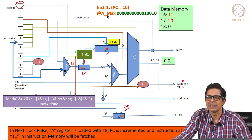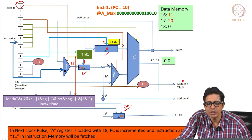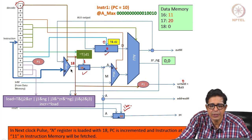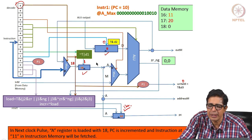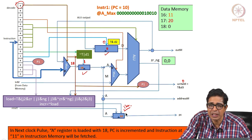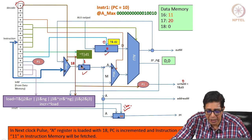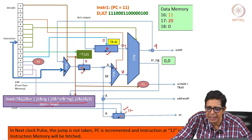The 10th instruction is @A_max, where max maps to 18. This A-type instruction routes 18 to the A register. writeM = 0, D_load = 0, PC in increment mode. On the tock: A register gets 18 and PC increments to 11. D and memory remain unchanged.